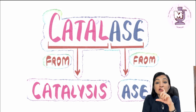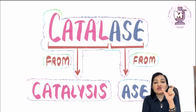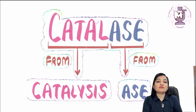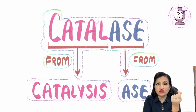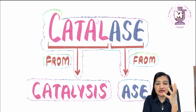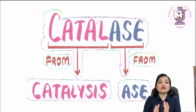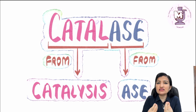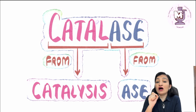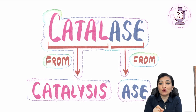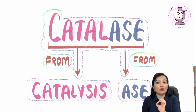The word catalase comes from catalysis — T-A-T-A-L has been derived from the word catalysis, which means to catalyze or accelerate some process. And -A-S-E is a suffix for enzyme. So catalase is basically an enzyme which catalyzes the decomposition of hydrogen peroxide, H2O2, into H2O and O2.